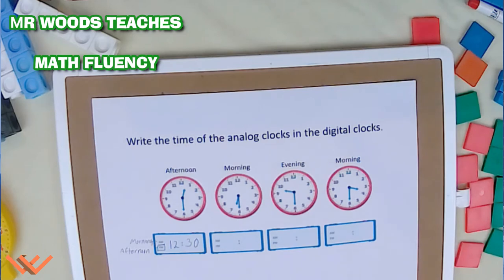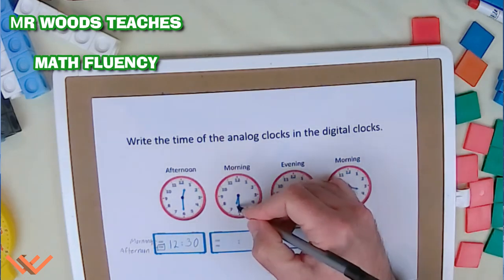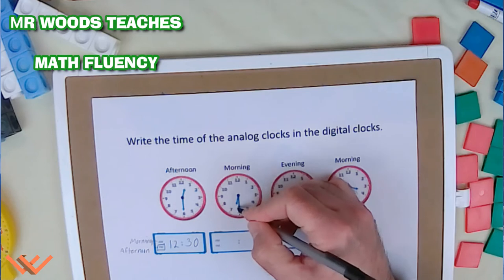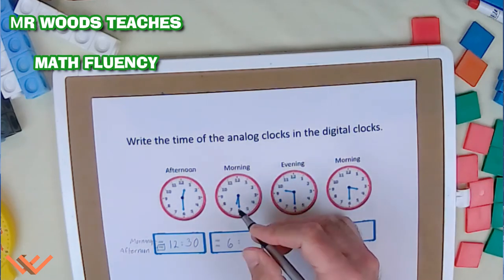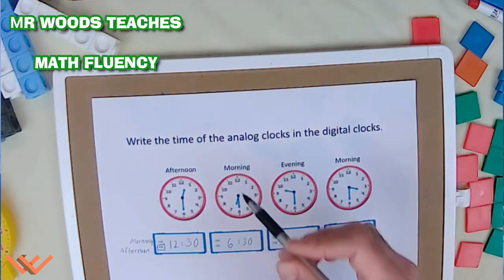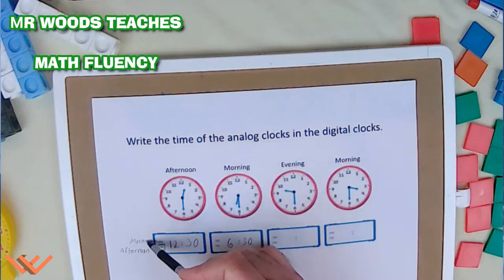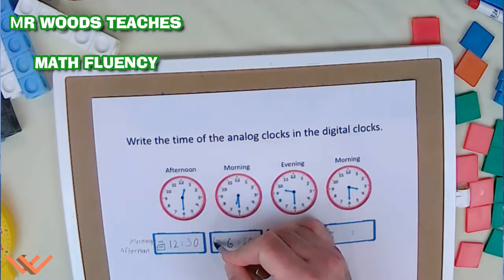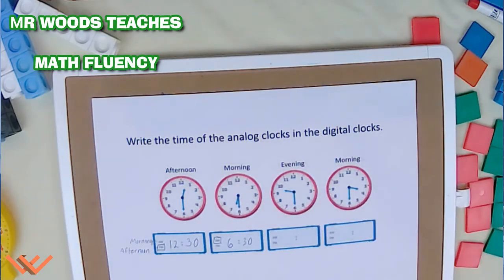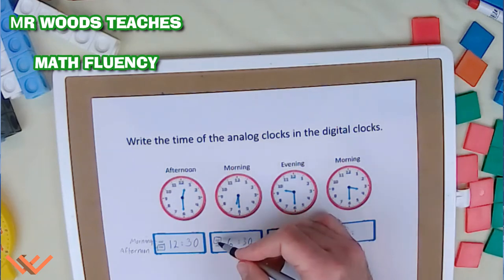The next clock, again, we went through it. We looked at it. Our hand is pointing between the 6 and the 7. We go for 6. We know that when the minute hand is pointing at the 6, that's 30. Let's take a look at this other clue up here. Morning. Morning is AM. So we choose AM, which means morning.